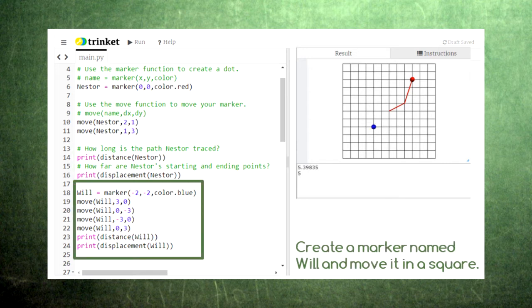Let's try another example. This code will cause a new marker Will to move in a square. First, Will moves to the right by 3 units, then down 3 units, then left 3 units, and then up 3 units.